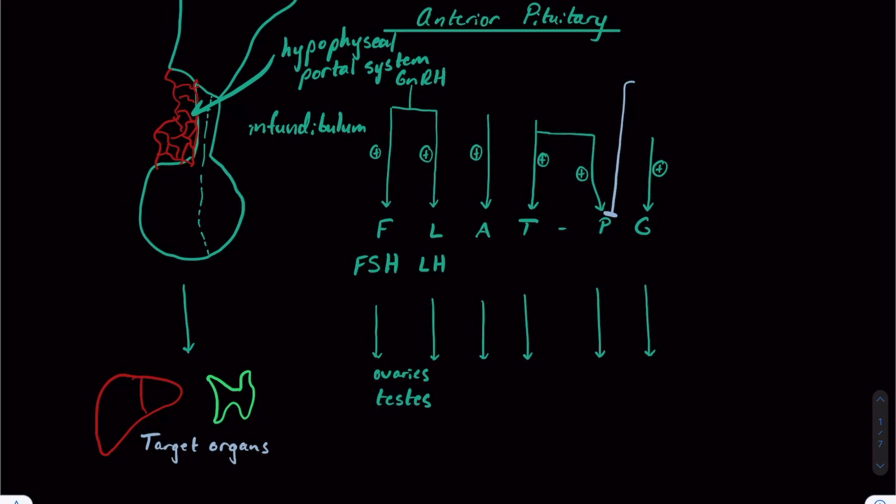A stands for ACTH, adrenocorticotropic hormone. This is stimulated to be released by corticotropin releasing hormone. ACTH acts on the adrenal cortex, actually all three layers, but primarily the zona fasciculata to secrete cortisol. T stands for TSH or thyroid stimulating hormone. That's stimulated to be released by TRH or thyrotropin releasing hormone. TSH acts on the thyroid to release our thyroid hormone, T3 and T4.